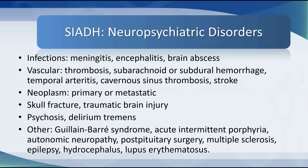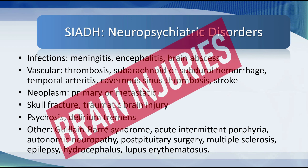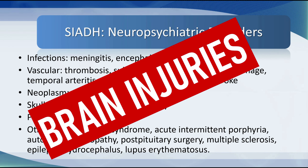The first causes of SIADH are neuropsychiatric disorders: infections such as meningitis, encephalitis, and brain abscess; vascular problems including thrombosis, subarachnoid or subdural hemorrhage, temporal arteritis, cavernous sinus thrombosis, and stroke; brain neoplasms, skull fractures, traumatic brain injury, psychosis, delirium tremens; and other conditions such as Guillain-Barré, acute intermittent porphyria, autonomic neuropathy, post-pituitary surgery, MS, hydrocephalus, and lupus. Brain injury is the first thing you think about when somebody presents seizing with hypotonic hyponatremia.